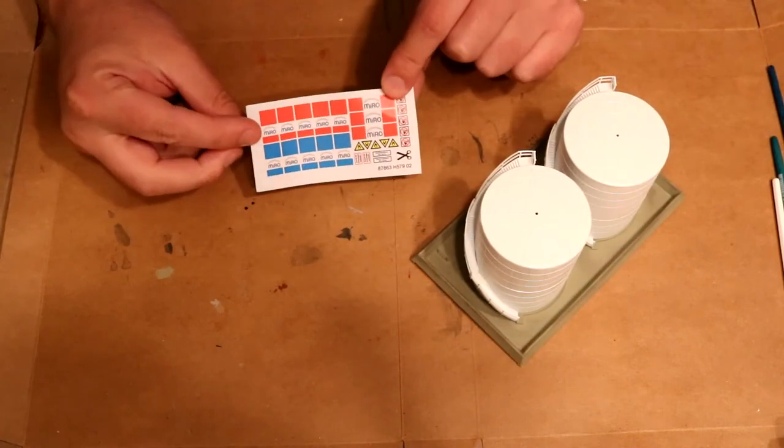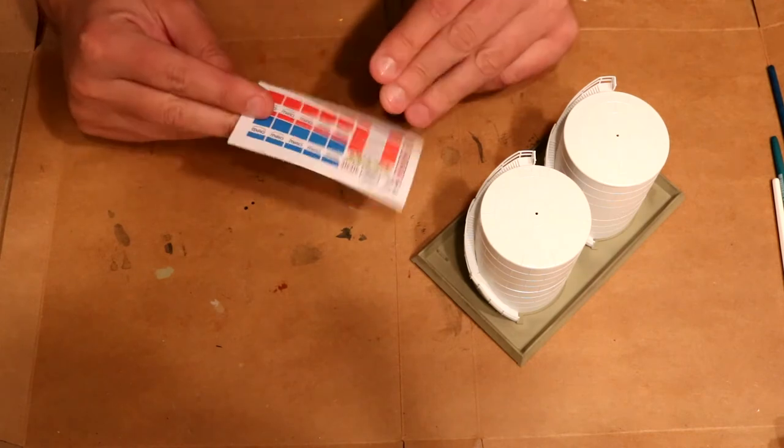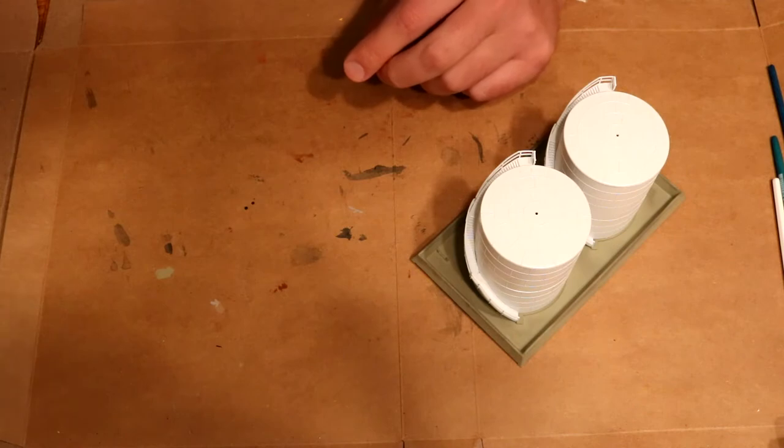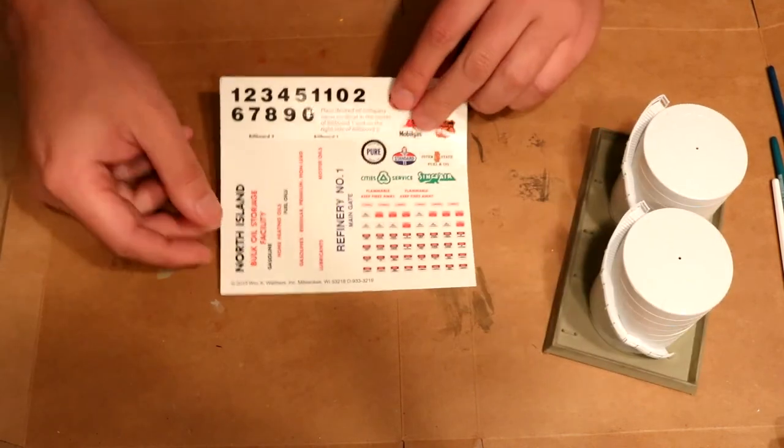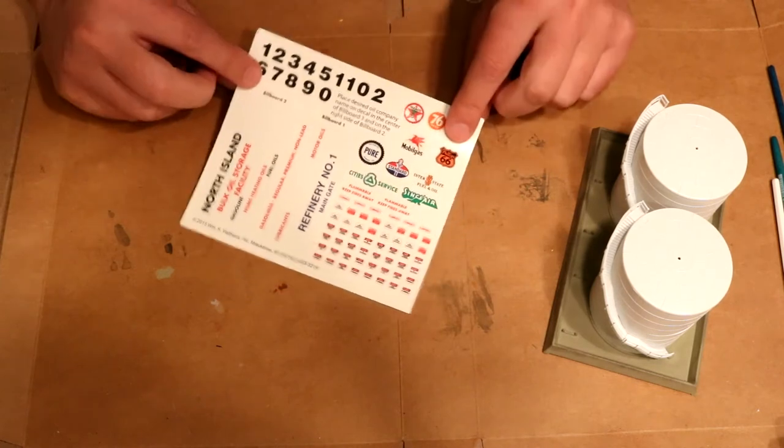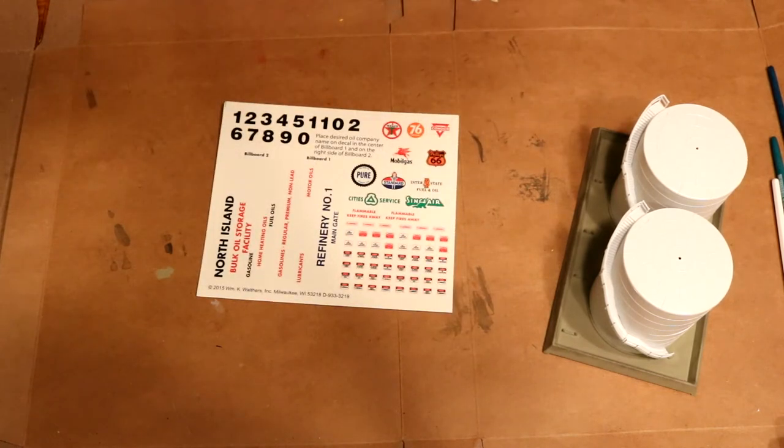The other thing I wanted to do was add some warning decals to the kit just to give it some more detail. And this is what comes with the kit itself. And this is just a piece of paper. I don't like that. So I'm going to use some decals that came with the previous Walthers refinery kit. And I think some of these smaller ones will work just fine. So I'll go ahead and do that.